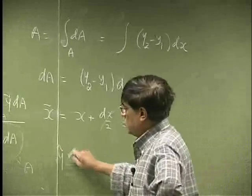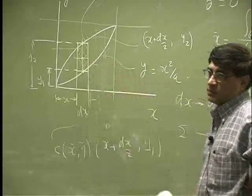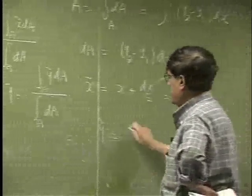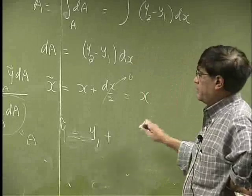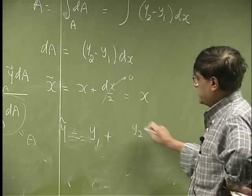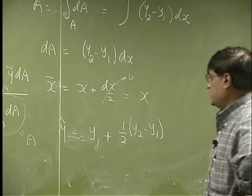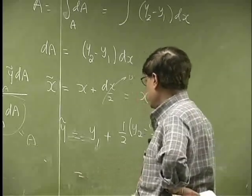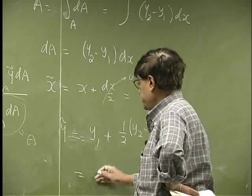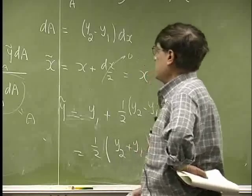Now we need the y-coordinate. Now y-coordinate will be this height plus this height. So again, from the same diagram, we're looking at y1 plus the distance y2 minus y1. We multiply this by half. And I should give you the y-coordinate. And that actually comes out to be one-half and y2 plus y1.